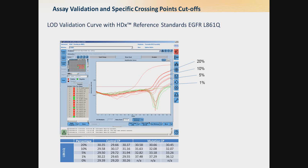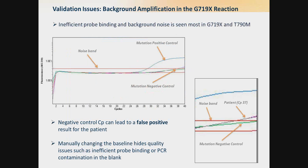Looking at their validation in greater detail, we see their dilutions for EGFR L861Q — real-time data from 20% down to 1% and the crossing point values. But there are certain variants where probe binding is not as efficient and background noise can occur. This is seen most commonly in EGFR T790M and also in G719X, which from the proficiency testing data we looked at previously is the variant that people have the most trouble with. If the negative control crossing point value is used in these cases, it can lead to a false positive diagnostic report for the patient.